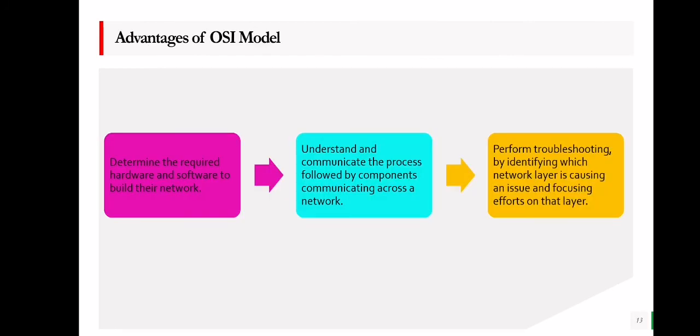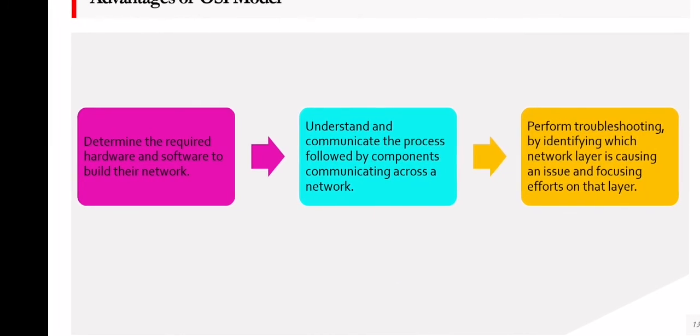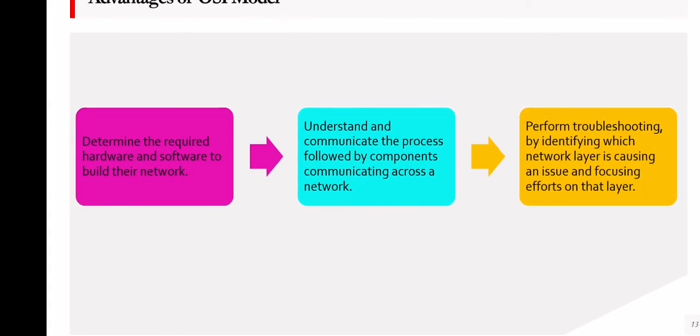What are the advantages of the OSI model? The OSI model helps in determining the required hardware and software to build a network. It helps understand and communicate the process followed by components communicating across a network, and it performs troubleshooting by identifying which network layer is causing an issue and focusing efforts on that layer.